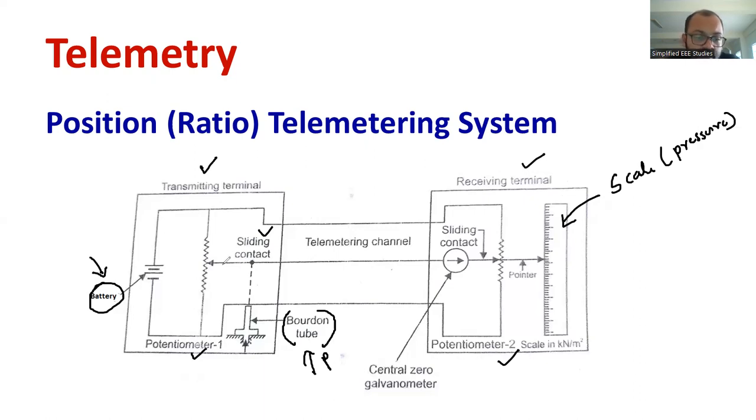Similarly, the same information will be reaching to the receiving end terminal. These are wired. The same information will be reached at the receiving end side. Here, there is a meter, like a calibration meter, like a central zero galvanometer. It detects the changes in current or voltage.